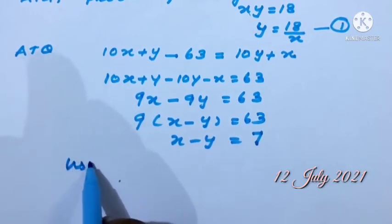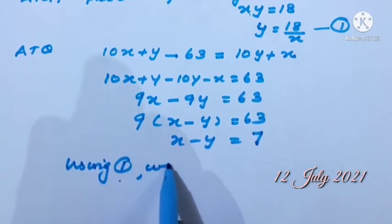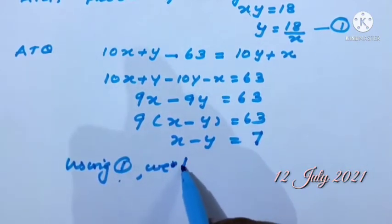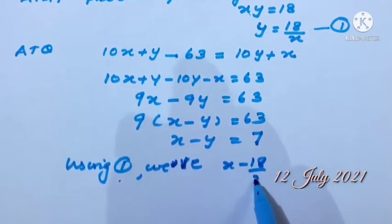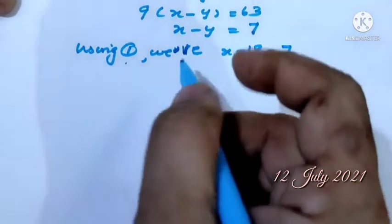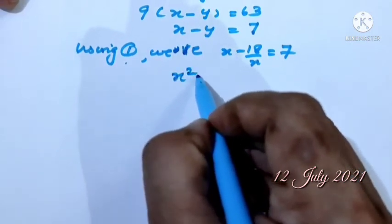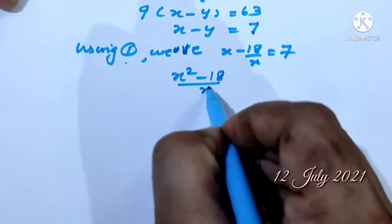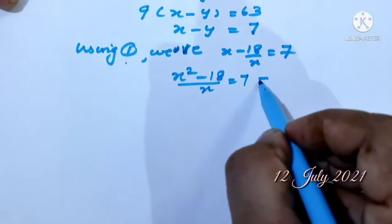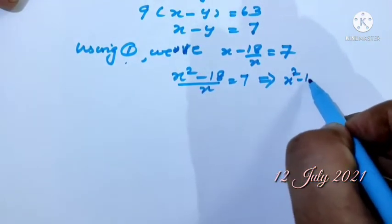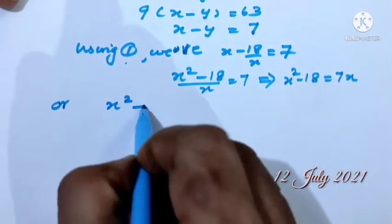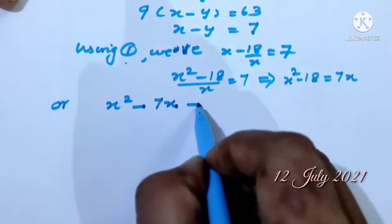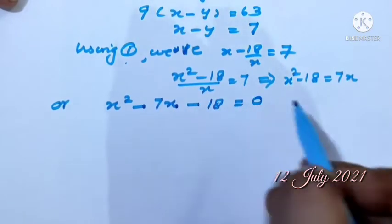Substituting Y equals 18 by X into X minus Y equals 7, using equation one: X minus 18 by X equals 7. Taking LCM: (X squared minus 18) by X equals 7. Cross-multiplying: X squared minus 18 equals 7X, so X squared minus 7X minus 18 equals 0.